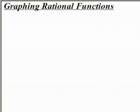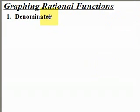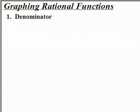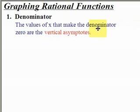In the three steps, the first step is to look at what makes the denominator zero. The values of x that make the denominator zero are the values of x that create the vertical asymptotes.